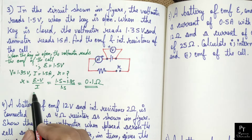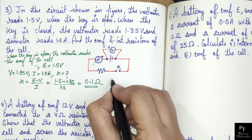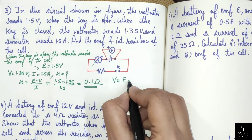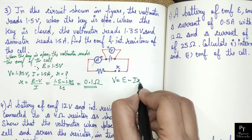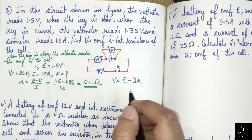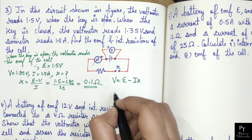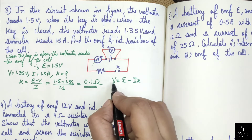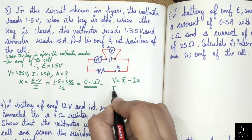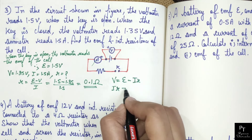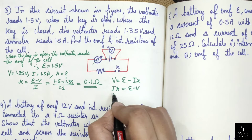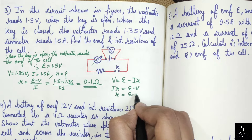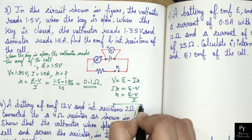We know that terminal potential difference is less than EMF by the potential drop across the internal resistance. Rearranging, we have internal resistance equals to (E minus V) upon I.